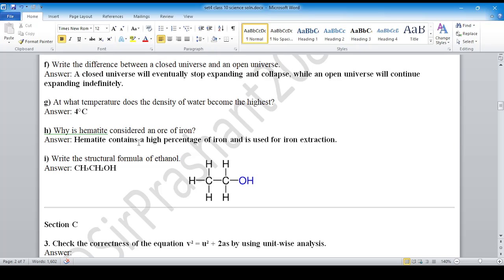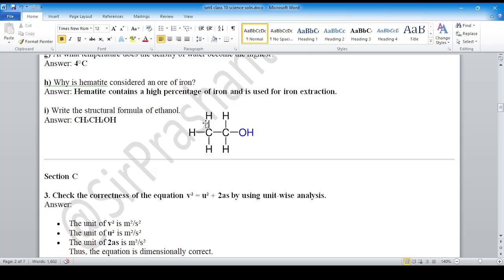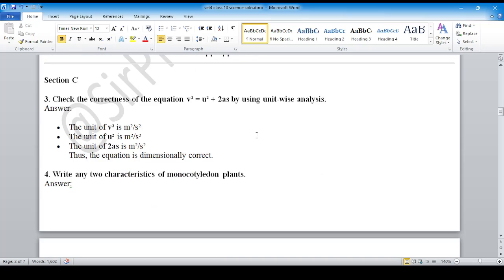Write the structural formula of ethanol. Ethanol has one carbon with an alcoholic OH group. Check the correctness of the equation dimensionally. On one side the unit is meter squared per second squared, on the other side U squared gives meter squared per second squared. We have the same unit on both sides, so this is dimensionally correct.